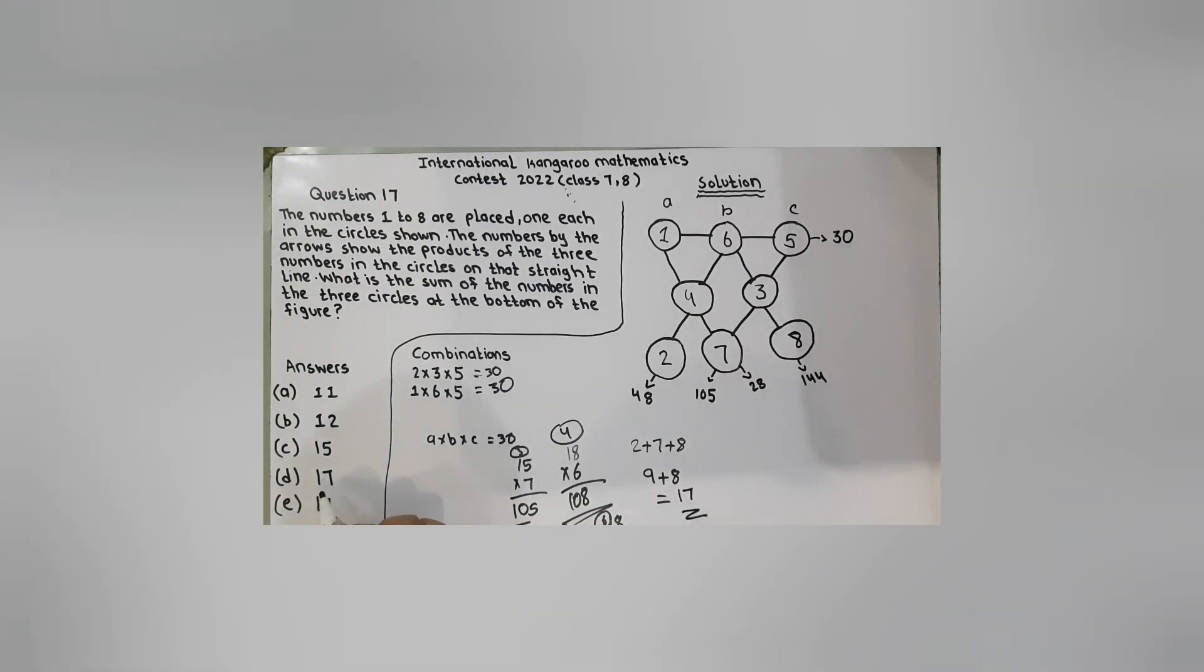And, option number D is 17. So, we will circle it. And, here our question is solved. Thank you guys for watching my video. I hope you have liked this one. Please subscribe my channel, like my videos, comment and share. Okay. Bye. Bye.